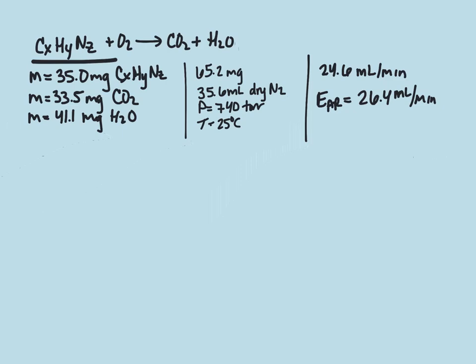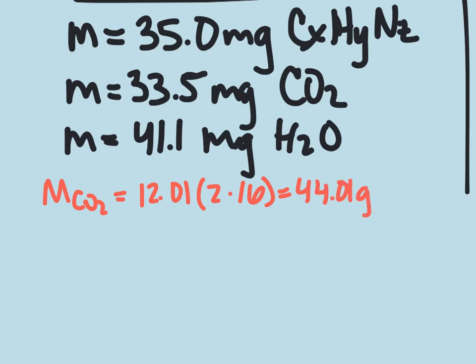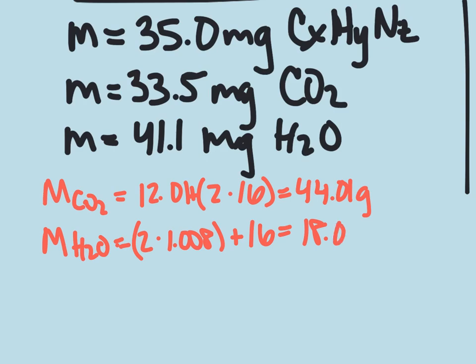So first thing we want to do is we want to calculate the molar mass of CO2, which is going to be 12.01 plus 2 times 16, which gives us 44.01 grams per mole. And the molar mass of H2O is 2 times 1.008 plus 16, which gives us 18.016 grams per mole.